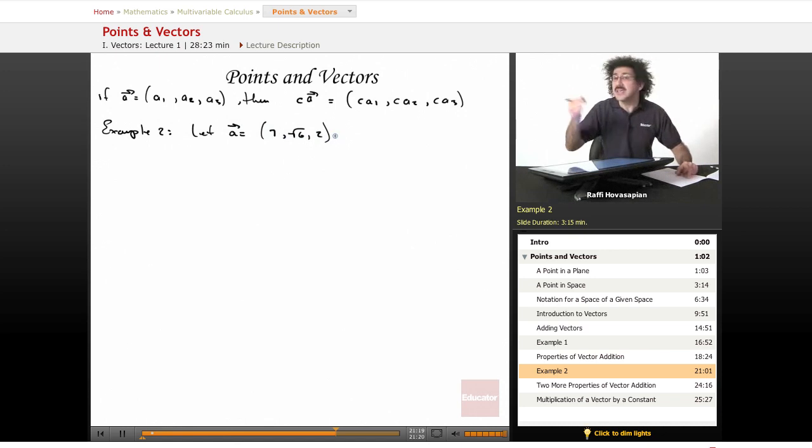It could be pi, it could be E, it could be anything. And we'll let the vector B equal 2, 2, 0.